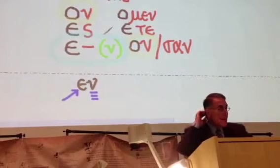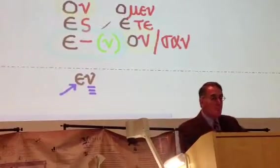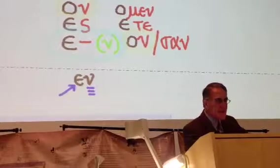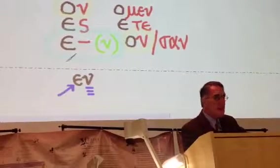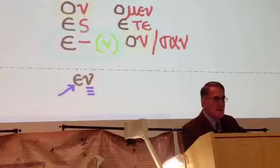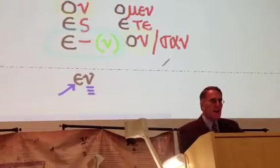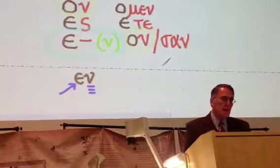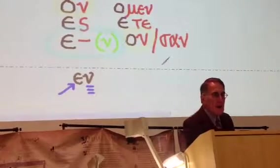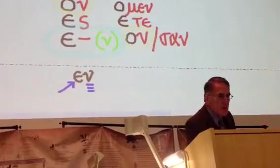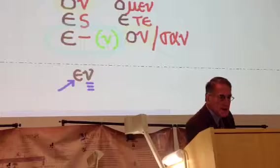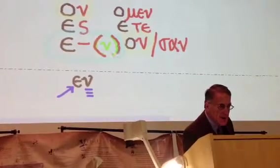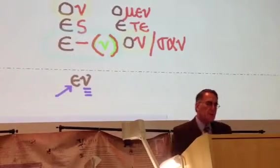Now, I want you to give me these endings when I ask for them, without the connecting vowels, because in other tenses that vowel is going to be different. And so you have to know what the endings are, and learn them as they are there in red, and not learn them with the connecting vowel. And I also want you to show me that you recognize that sometimes this will have a movable nu, and put that in parentheses.